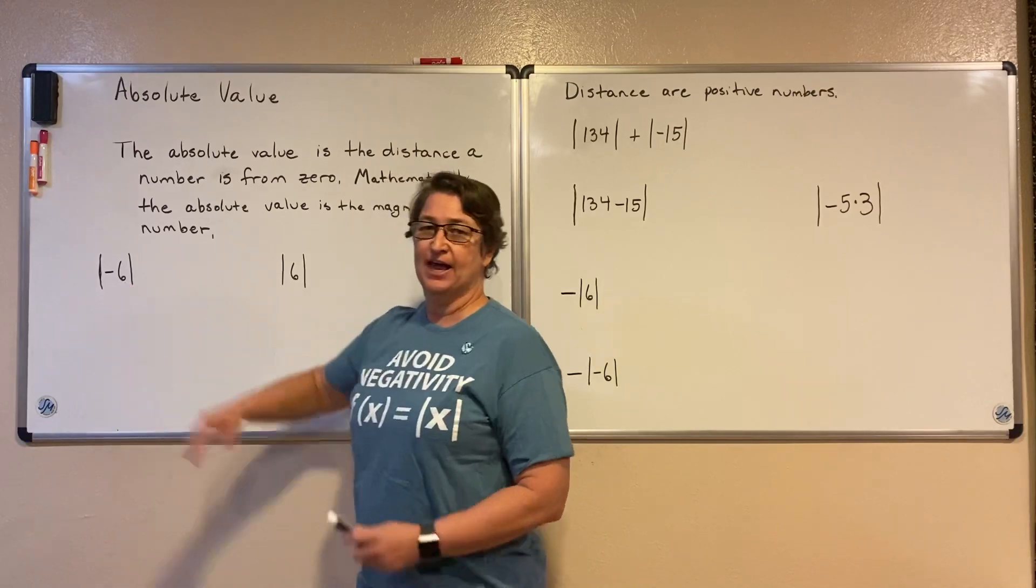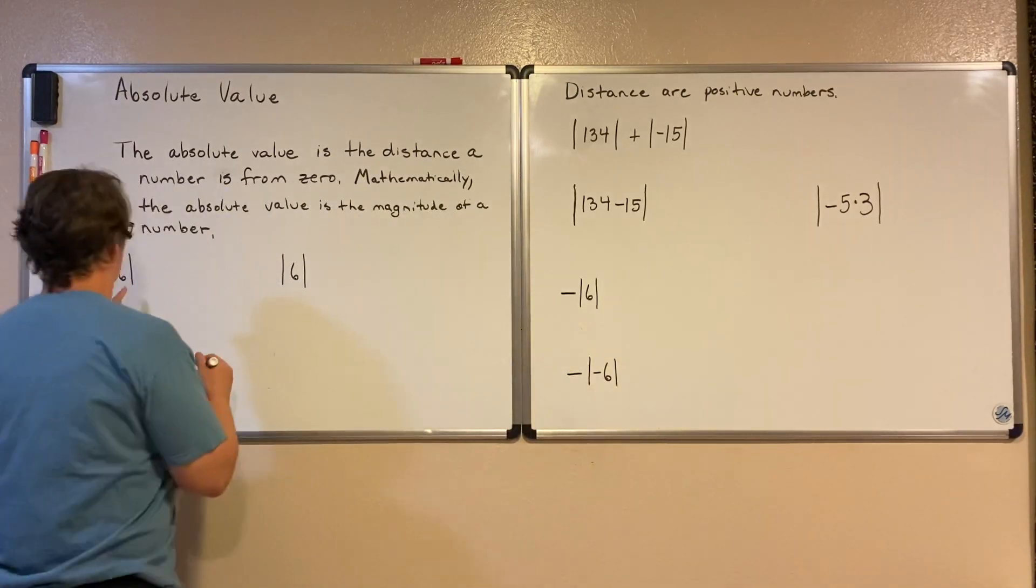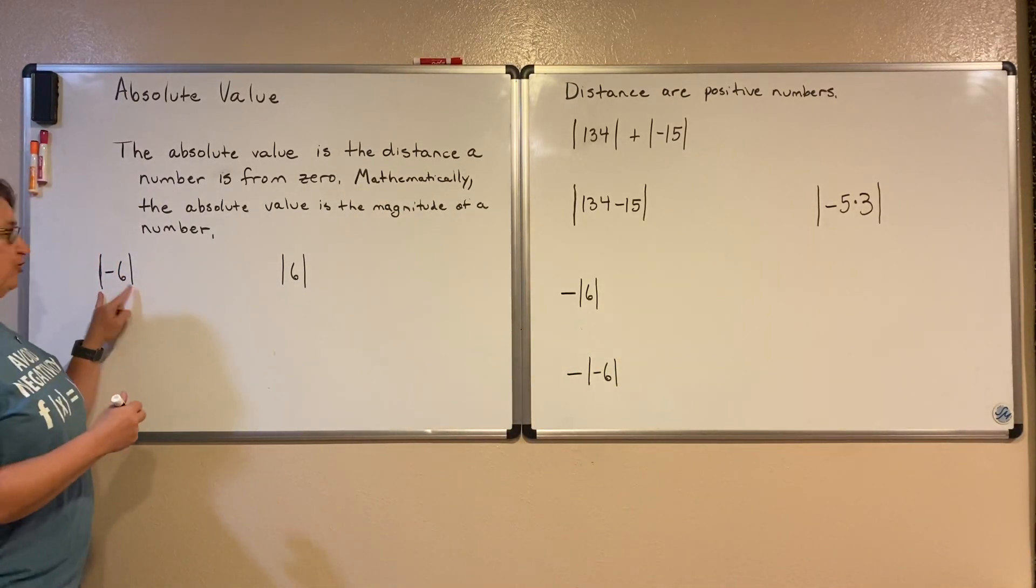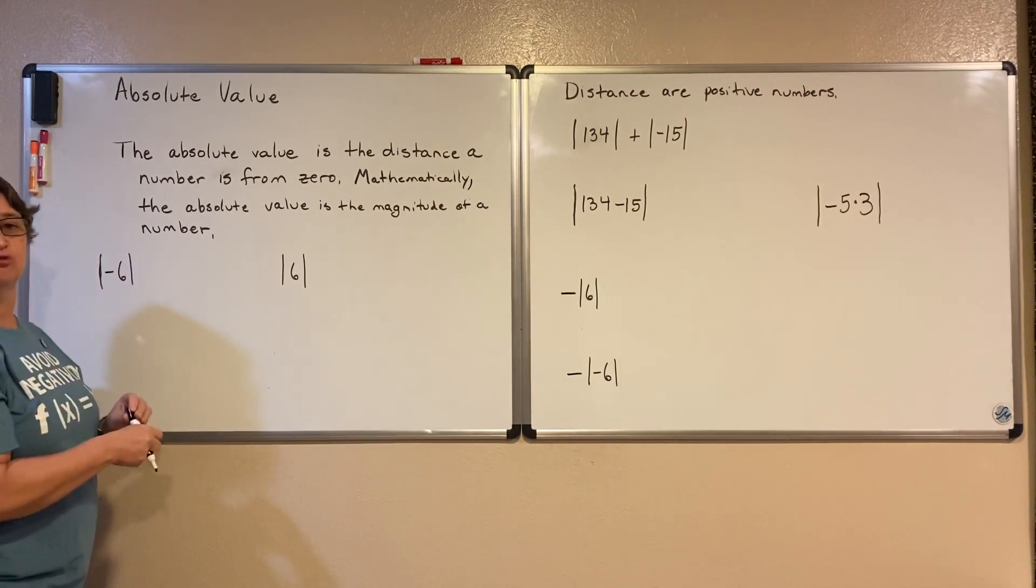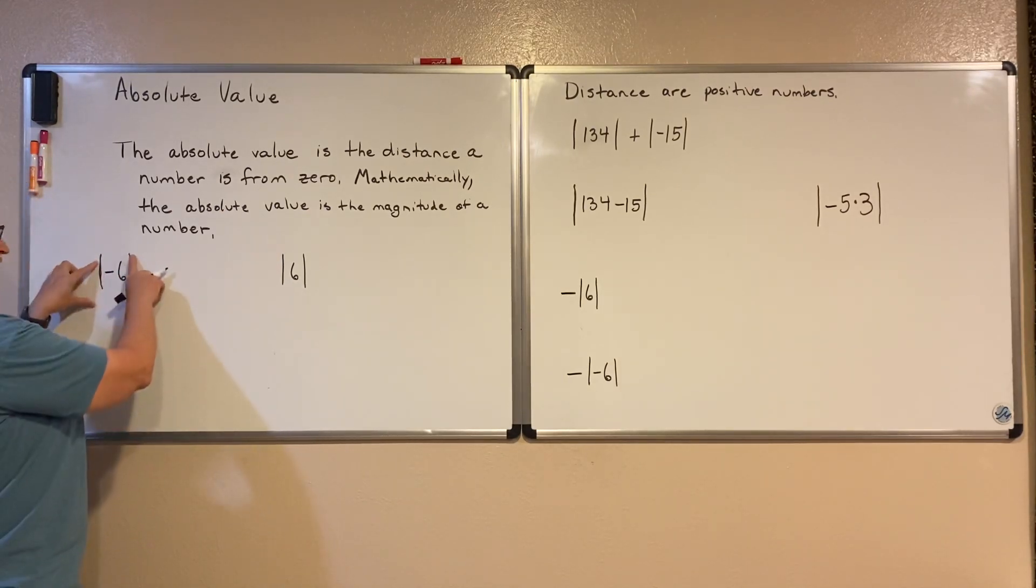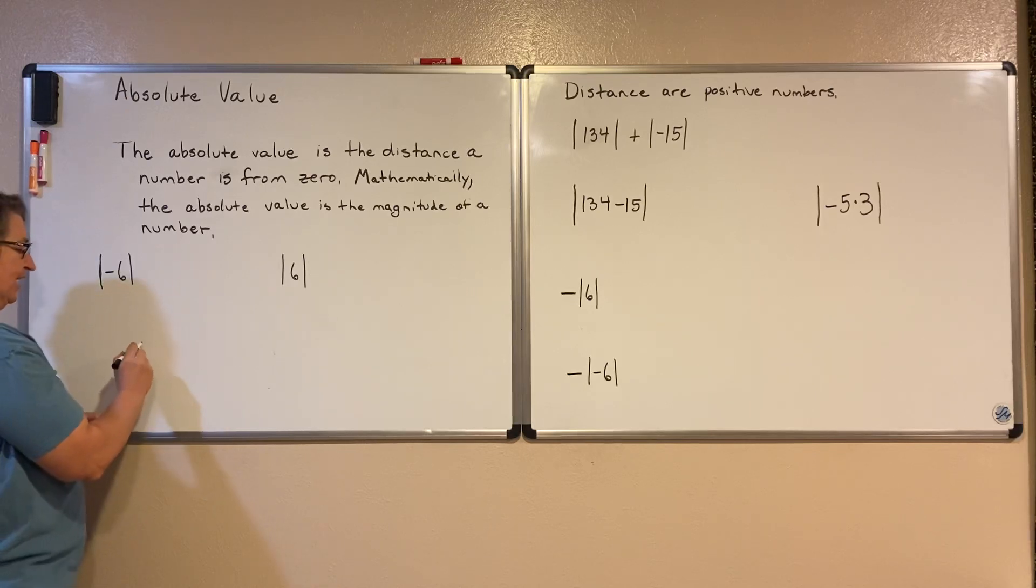Here we have negative six. I want to take the absolute value. These bars around it are just the symbols to let us know that's the absolute value of negative six.